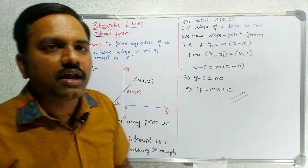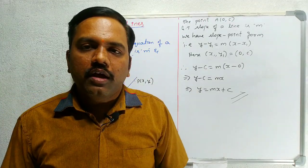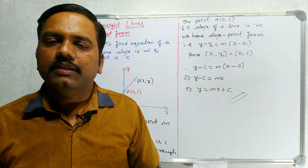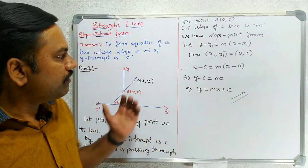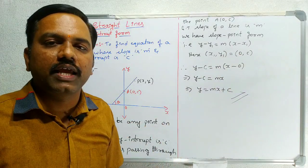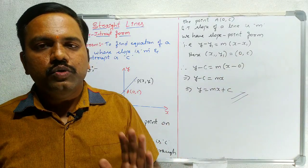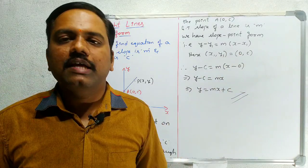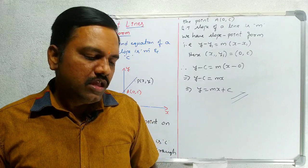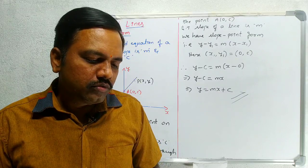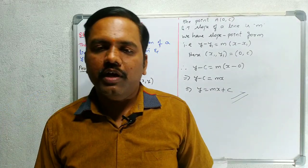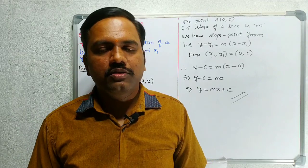So that's the derivation for the slope-intercept form. The equation of a line has been covered so far in this class. I think we will continue in the next class.